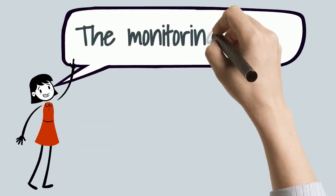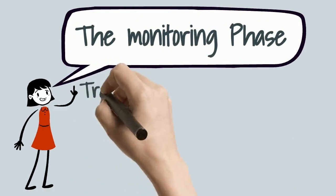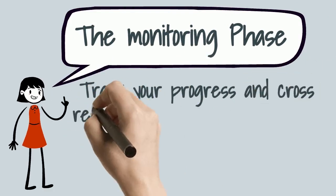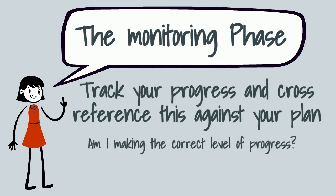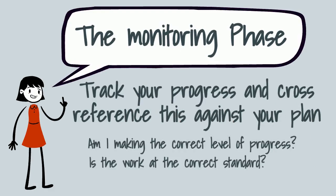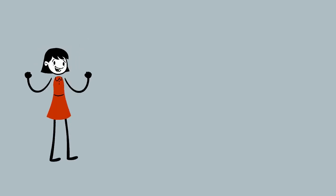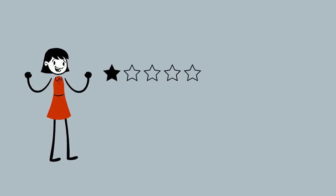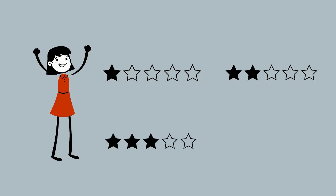Once a task had started, Jen was in the monitoring phase. She needed to cross-reference her progress against her plan. She needed to ask herself: was she making the right level of progress? Was the work completed to the right standard? And did she need to adjust the learning strategies and skills being used? Jen had learned that it was essential to systematically review the progress she was making throughout the task, in order to ensure that she was meeting her learning goals. This way, she could make any immediate adjustments to the skills and strategies being used, should it be required.